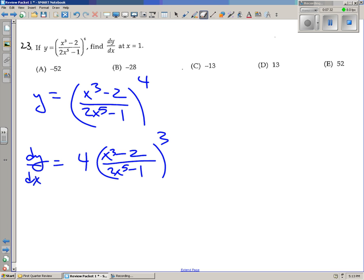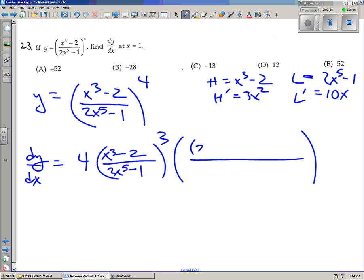So stuff is x to the third minus 2 over 2x to the fifth minus 1. Now times the derivative of the stuff, I'm going to have to make a bigger parenthesis here for sure. So we have a quotient rule problem on our hands. So high is x to the third minus 2. High prime is 3x squared. Low is 2x to the fifth minus 1. Low prime would be 10x to the fourth. So we have low d high, 2x to the fifth minus 1 times high, which is 3x squared, minus high d low. So that's x to the third minus 2 times 10x to the fourth over low squared, which is 2x to the fifth minus 1 squared.